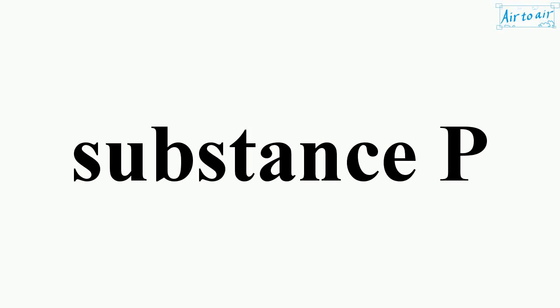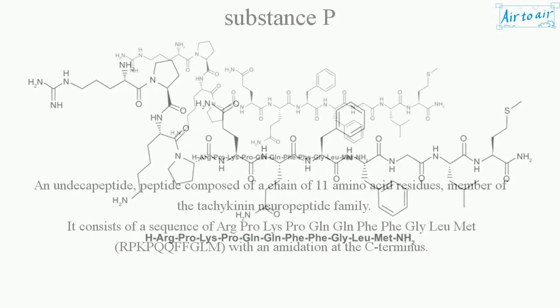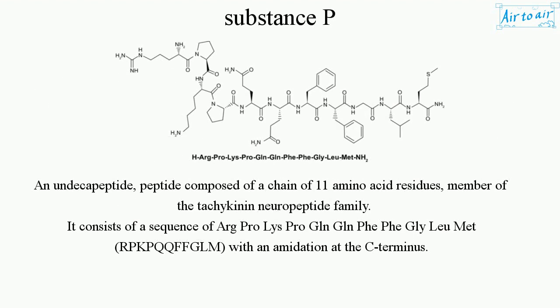Substance P is an undecapeptide — a peptide composed of a chain of 11 amino acid residues — and a member of the tachykinin neuropeptide family.